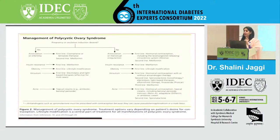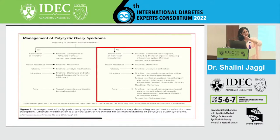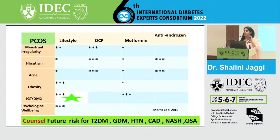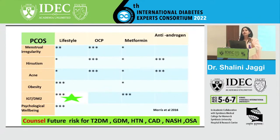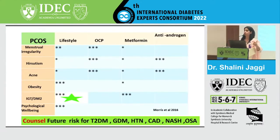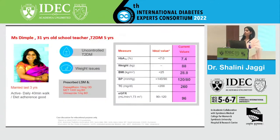Even after picking up PCOS and initiating treatment, an important part is warning her about the impending risk of developing type 2 diabetes, and the future risk of gestational diabetes in pregnancy — since PCOS is a very strong risk factor for GDM. Right from adolescence, sensitize her to this risk. Preconception counseling is relevant here, and psychological well-being and mental health must be addressed sensitively.